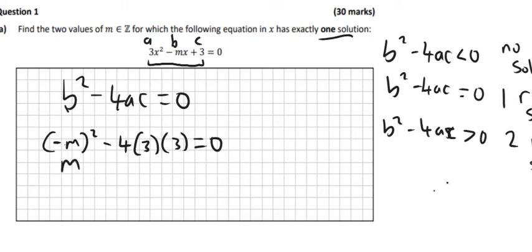Minus m squared is the same thing as m squared. Minus 4 times 3 times 3 will be 36, equals zero. Let's bring the minus 36 over to the other side, it becomes positive. So m squared equals 36. So therefore, m has to be equal to 6, and it can be equal to plus 6, or minus 6.